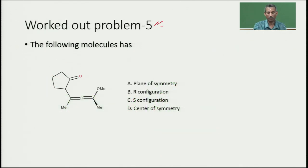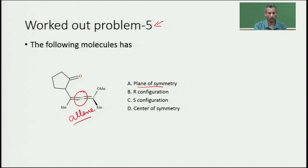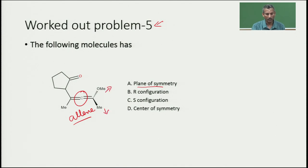The next problem involves an allene-type molecule with two cumulated double bonds. We check for center of symmetry: one group points toward and another away from the observer, with no similar groups on the other side — no center of symmetry. The molecule exists in two planes — one in the plane of the paper and one perpendicular — so there is no plane of symmetry either. We must assign R or S configuration.